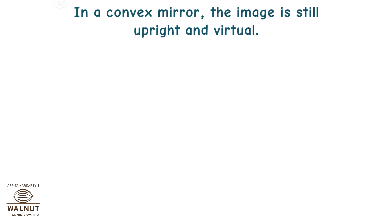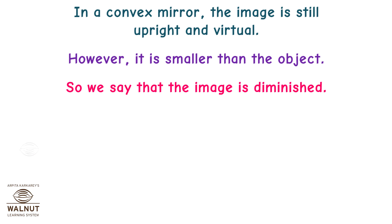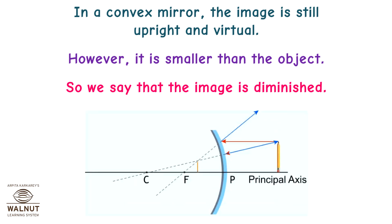In a convex mirror, the image is still upright and virtual. However, it is smaller than the object. So we say that the image is diminished.